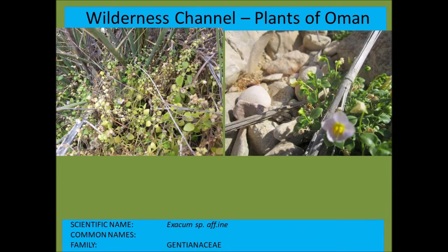This is an Exacum species found in very wet areas — in streams and wadis. Wherever you have permanent or dripping water you'll typically find these Exacum flowers. They have very tiny, not very conspicuous flowers until you're quite close up. They occur in wet areas.